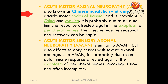Acute motor sensory axonal neuropathy (AMSAN) is similar to AMAN but also affects sensory nerves with severe axonal damage. Like AMAN, it is probably due to an autoimmune response directed against the axoplasm of peripheral nerves. Recovery is slow and often incomplete, making this a more severe form. Sensory loss is the prime complaint — sensations are lost first.